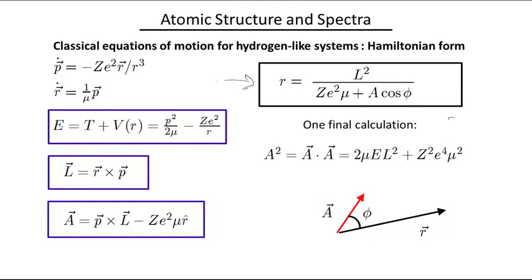This is an orbit which can be a circle, an ellipse, or a hyperbola, and the distinction between those depends upon the energy. There's one last calculation that is worth doing, and that is to calculate a squared.